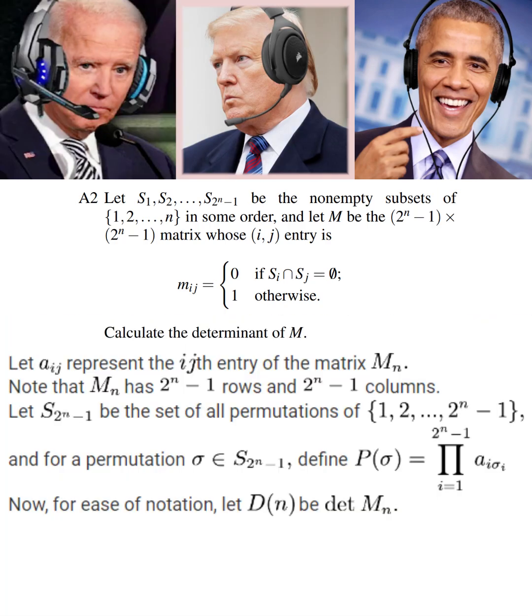All right, fine. So let A sub IJ represent the IJth entry of M sub N, and let S sub 2 to the N minus 1 be the set of permutations of the first 2 to the N minus 1 positive integers. Then, for ease of notation, for a permutation sigma, define P of sigma as the product from I equals 1 to 2 to the N minus 1 of A sub I sigma I, and define D of N as the determinant of M sub N, which is what we're trying to find.